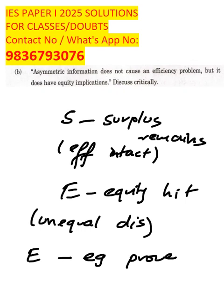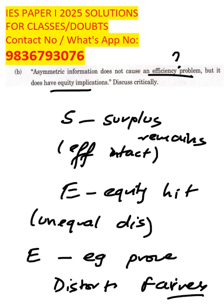Asymmetric information doesn't always kill efficiency, because trade can still happen. But what it does? It distorts the fairness, making it more of a distributional or equity problem. Best of luck, students.